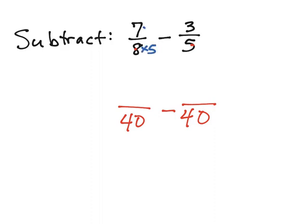So that means I have to multiply that numerator also by 5, because math is about equality. And we're making an equivalent fraction. So 7 times 5 is 35. On the right side, 5 times 8 is 40. So 3 times 8 is 24.